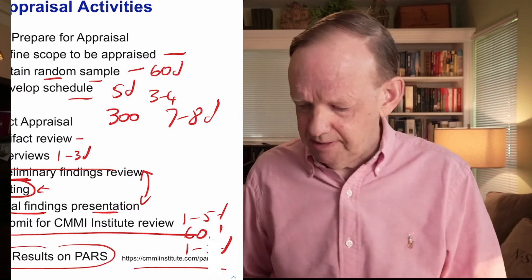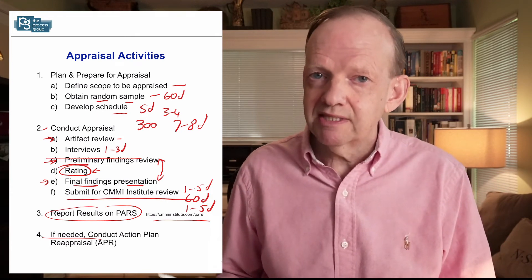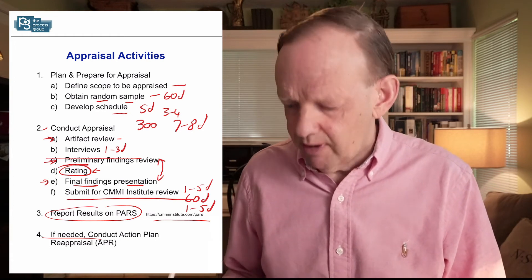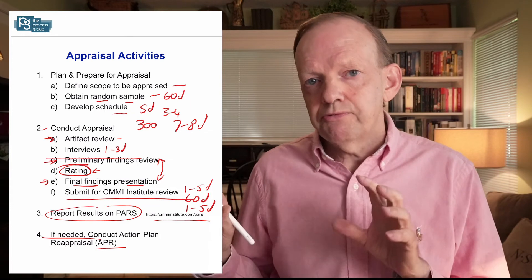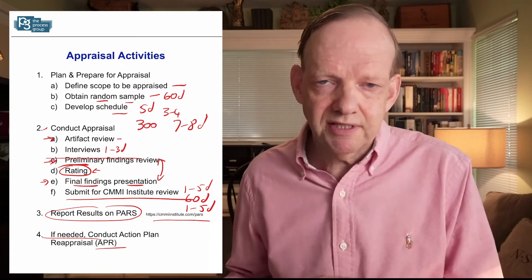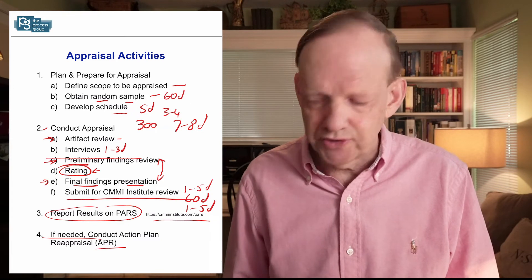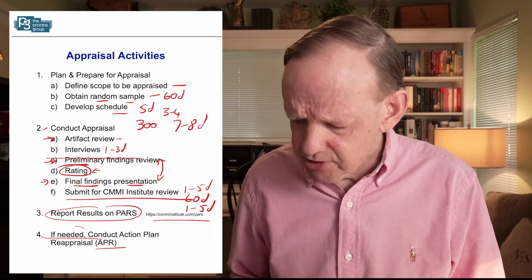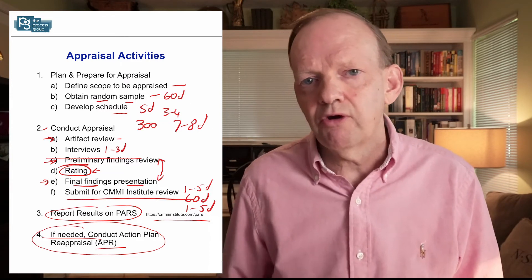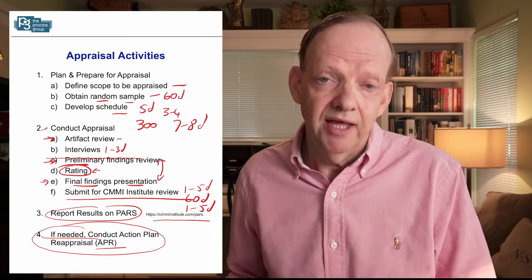Most people do publish their results on the website. If you went through the appraisal and there were some gaps we didn't detect beforehand that caused you to not get the level you wanted, you can make a request for an APR — Appraisal with Pre-existing Results. You fix the three to five gaps, we appraise just those gaps, and add the result back to the previous appraisal. It's like a delta patch appraisal. You need permission from the Institute and there's a threshold for how many gaps are allowed.